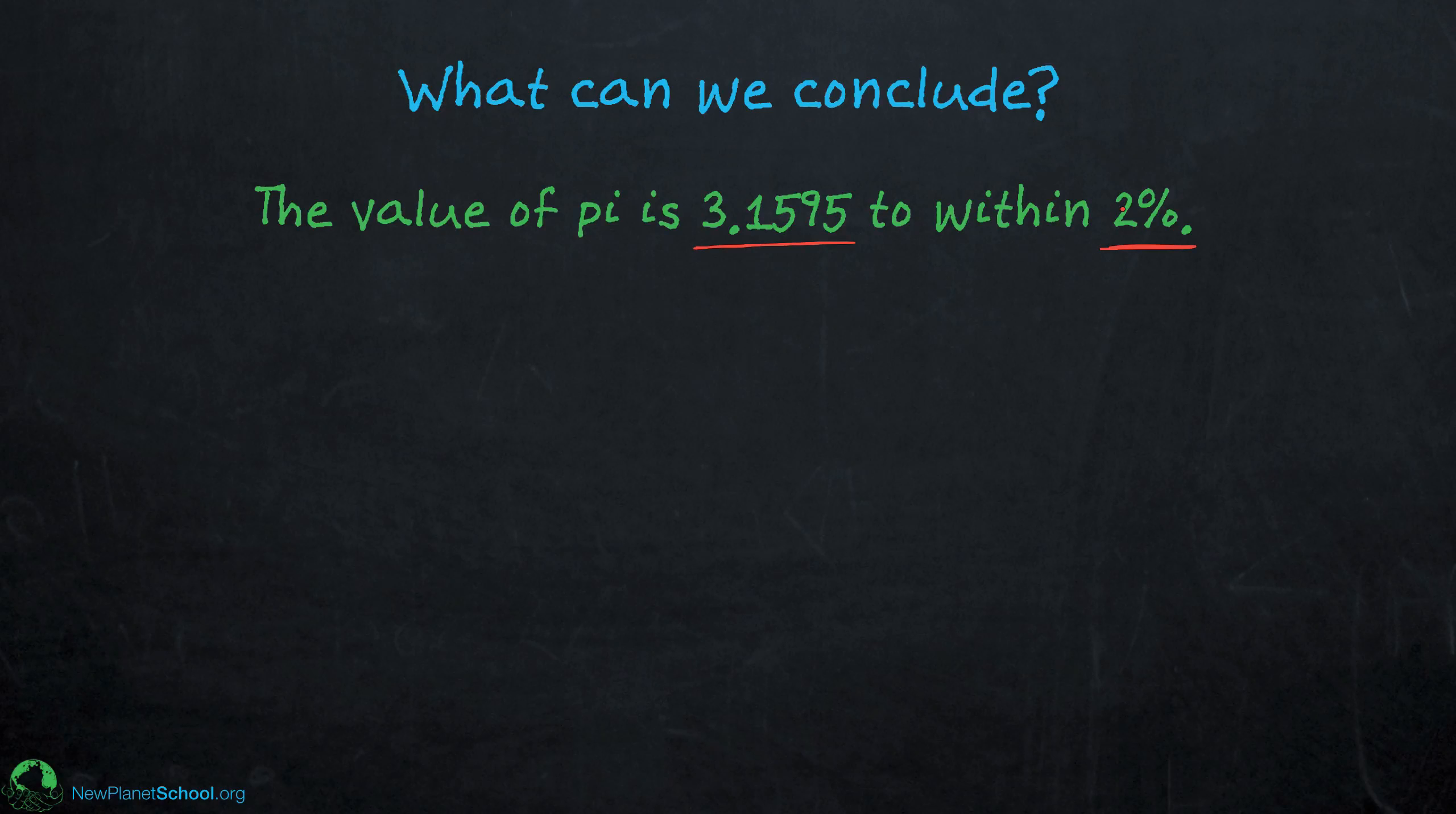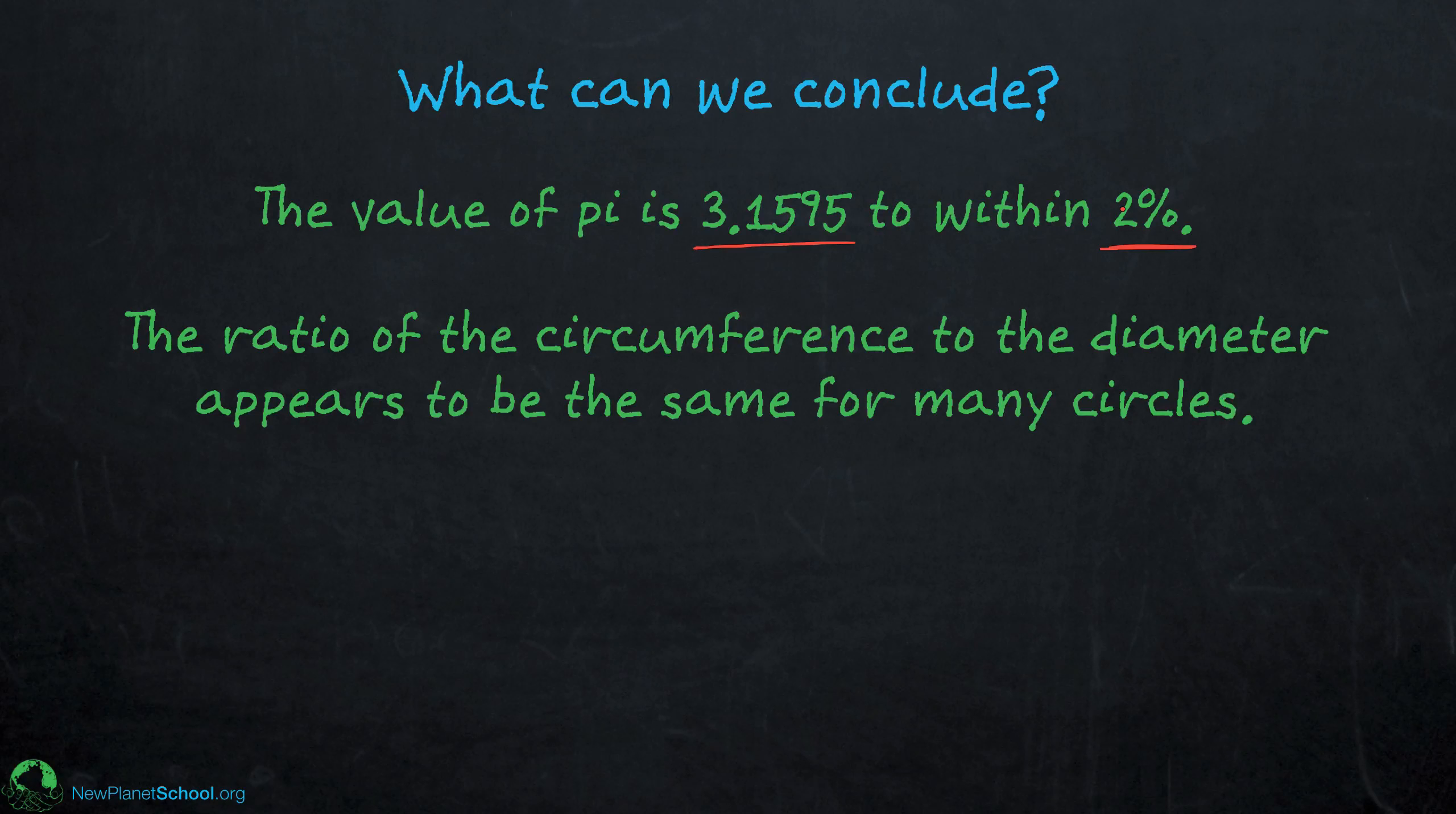However, it's possible to look at the data from a different perspective. We made six different measurements of six different objects, one measurement of each, and we found the ratio of the circumference to the diameter for each of them appears to be approximately the same. In other words, there seems to be evidence here, even though we only made six measurements, that indeed, the ratio of the circumference to the diameter of different circles has the same value, and that value is approximately equal to pi.